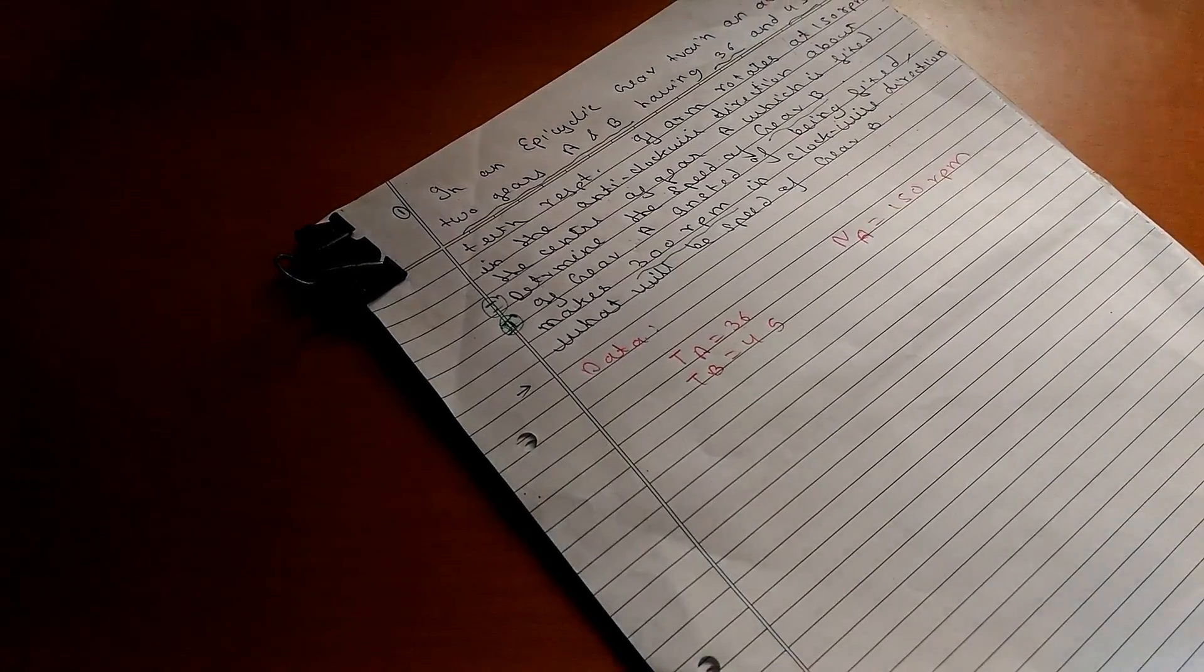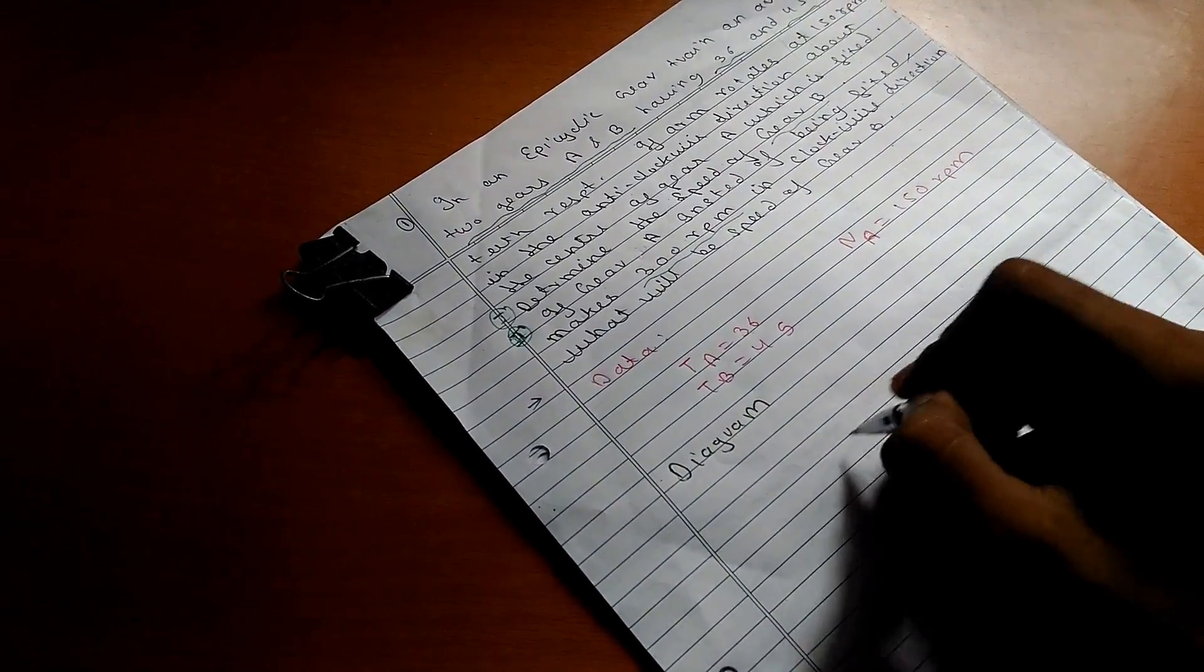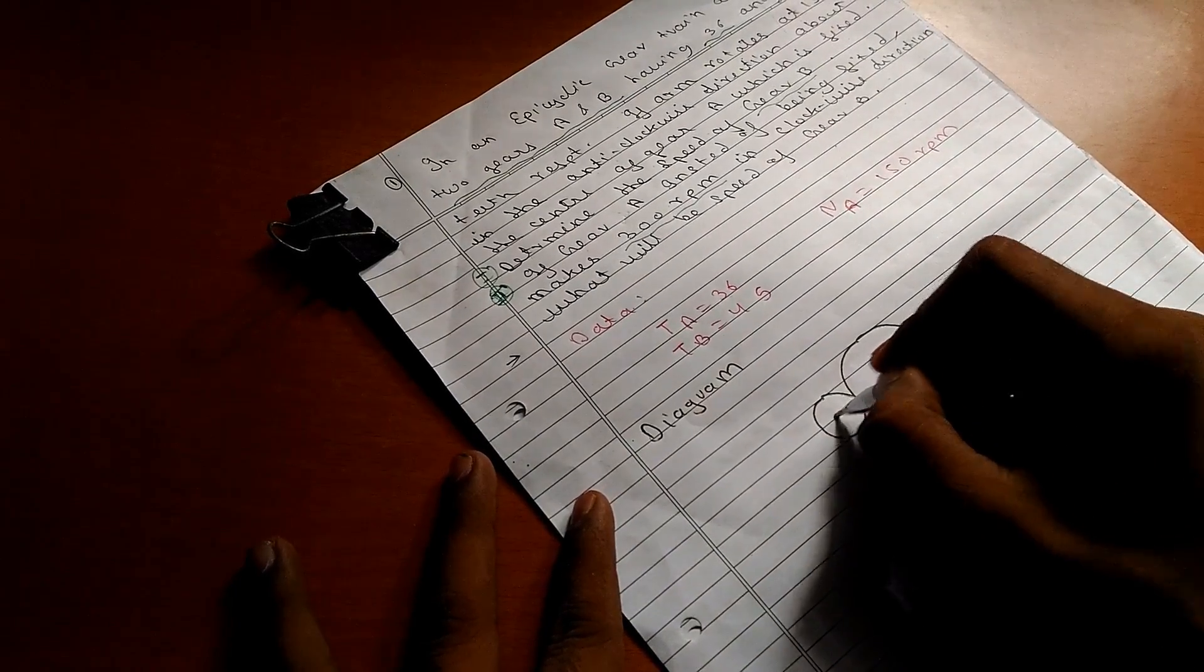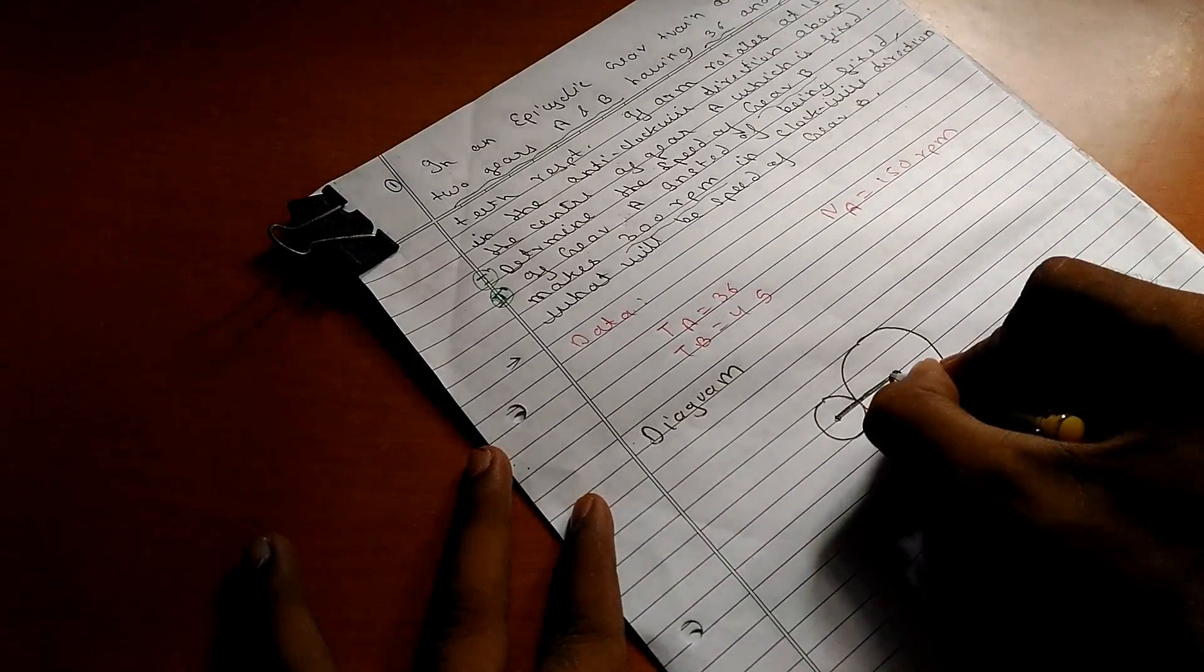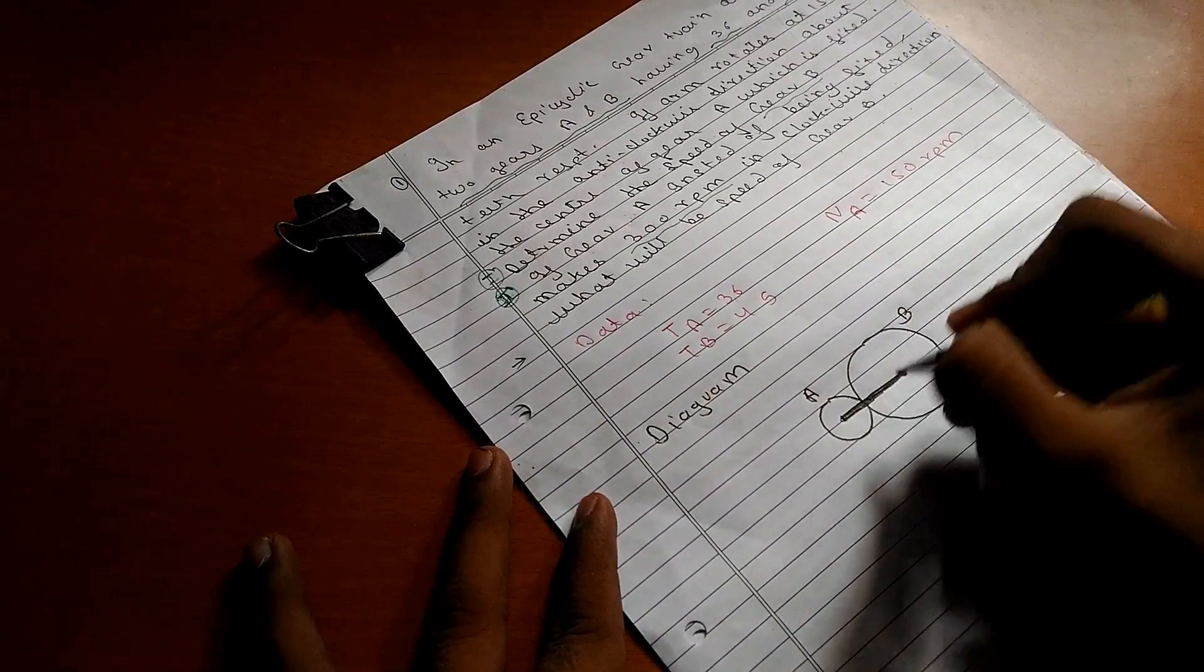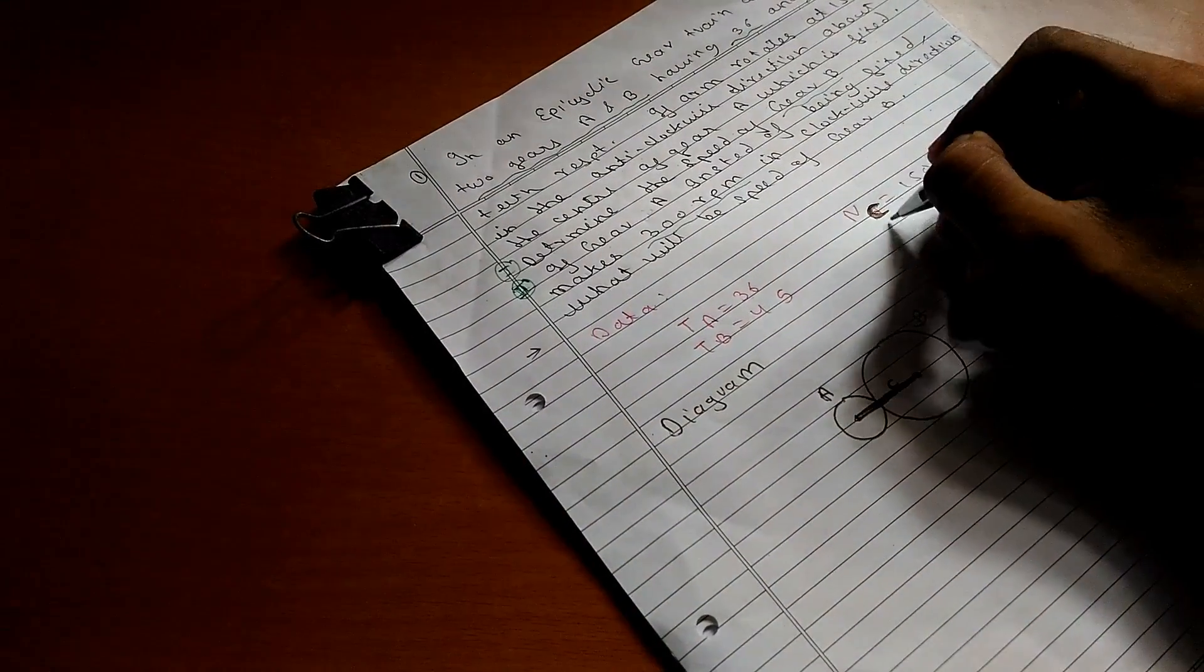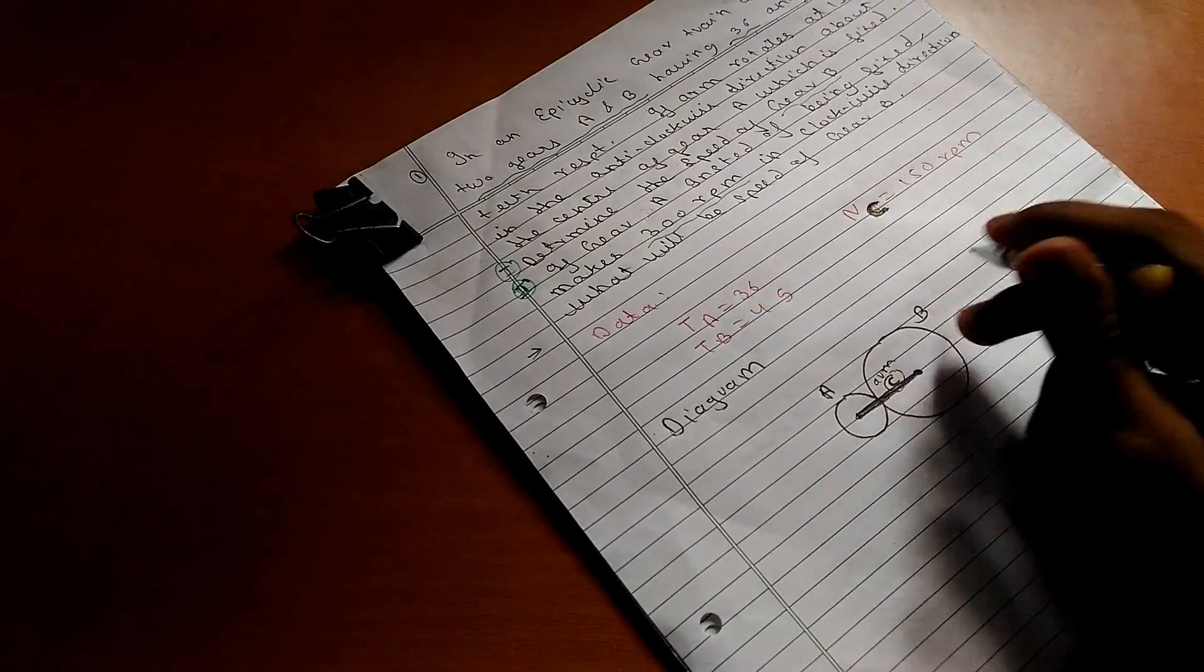Now let us draw the diagram. So it will be basically having a smaller gear and one larger gear. So both are connected with the help of an arm. So this is gear A, gear B, and this is the gear arm C, so that it doesn't create any misunderstanding or confusion.